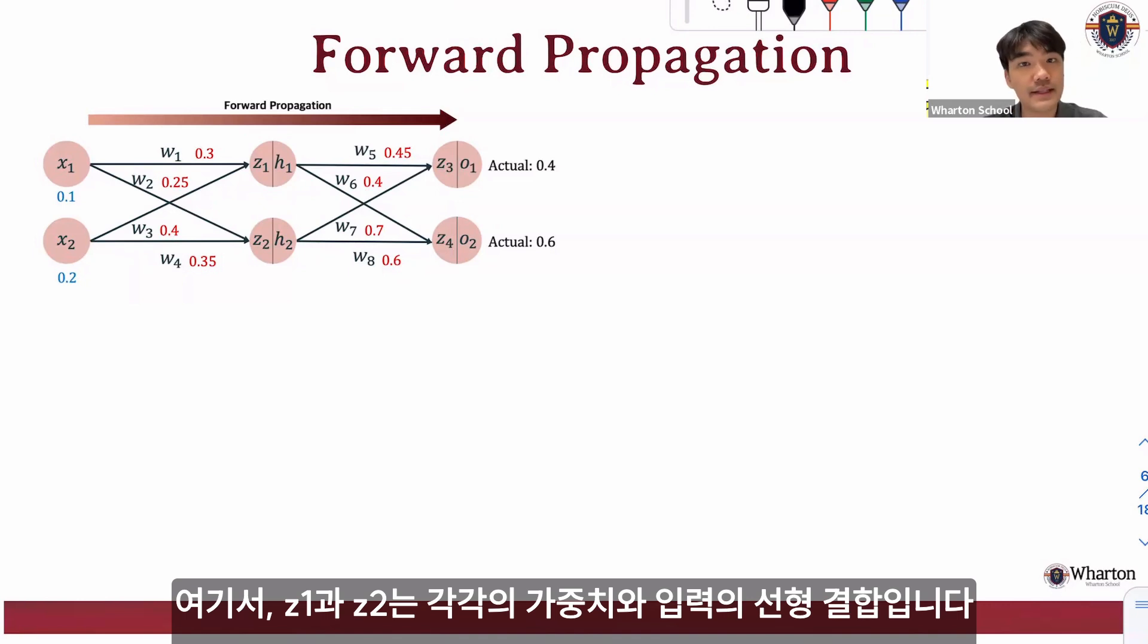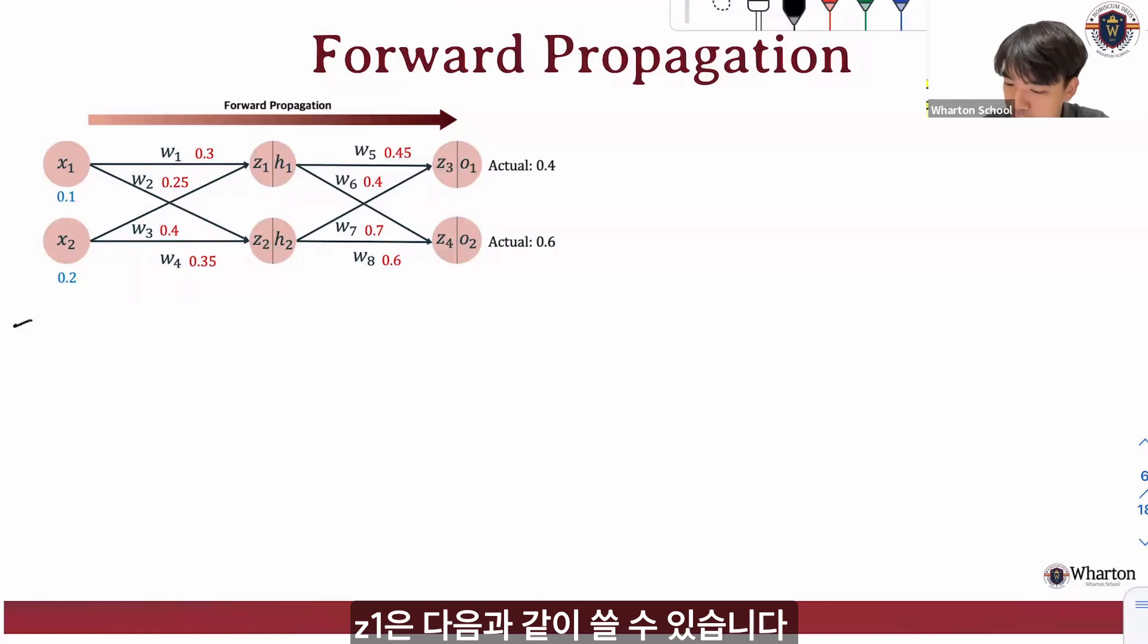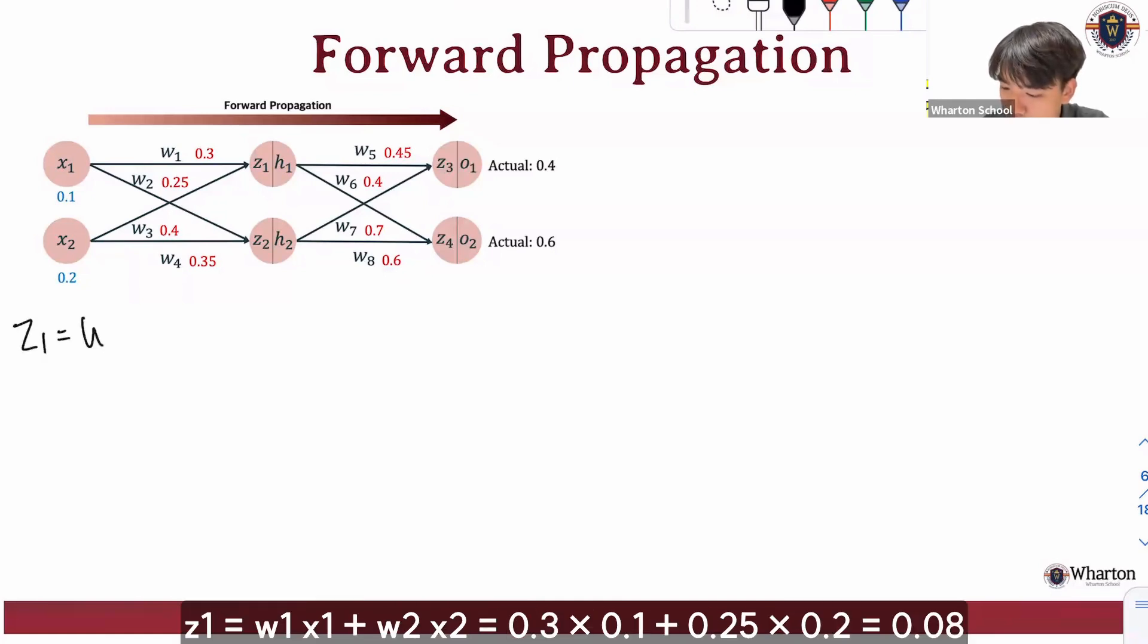Here, z1 and z2 are the linear combination of each weight and the input. So we can represent z1 as w1x1 plus w2x2, which is 0.3 multiplied by 0.1 plus 0.25 multiplied by 0.2, which is 0.008.